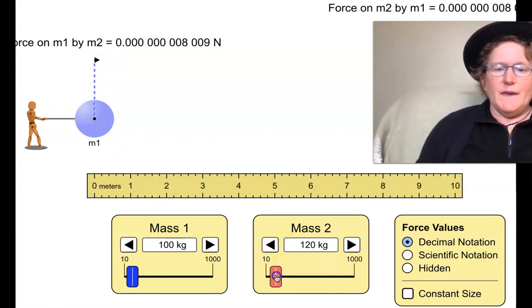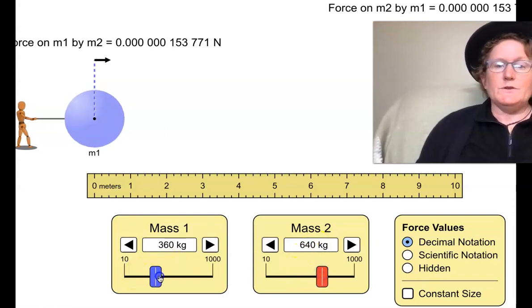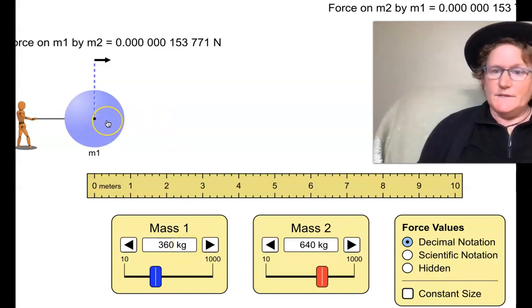We can also change the masses of the objects, and you can see how that influences both forces at the same time. So remember there's two things we can change as independent variables. We could change the mass while holding distance constant, or we could change the distance while holding the mass, keeping the mass the same, holding it constant.